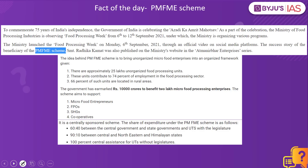Now let's look into the fact of the day: the PMFME scheme. This was launched under the Atmanirbhar Bharat Abhiyan. We have the Pradhan Mantri Formalization of Micro Food Processing Enterprises scheme, which is a centrally sponsored scheme. There are two types of schemes: a central sector scheme, where 100% of the financial responsibility is borne by the central government with no expenditure by the state; and a centrally sponsored scheme, where a certain percentage is also contributed by the state government. Since PMFME is a centrally sponsored scheme, for states not part of the Northeastern and Himalayan states, the expenditure share is 60:40 — with 60% from the central government and 40% from the state government.